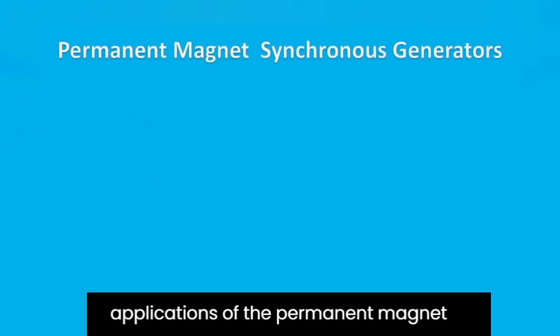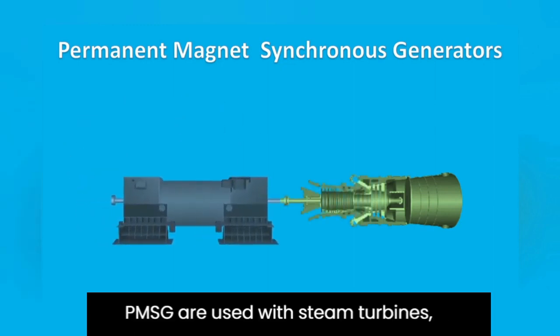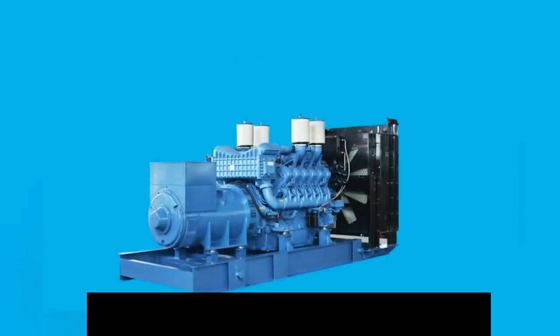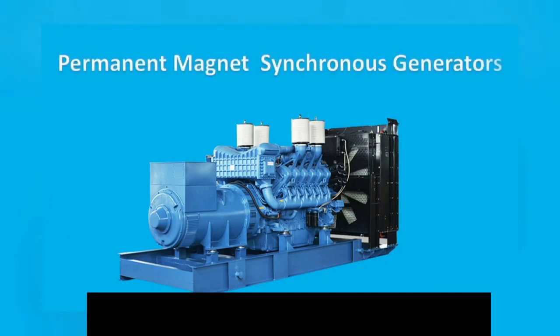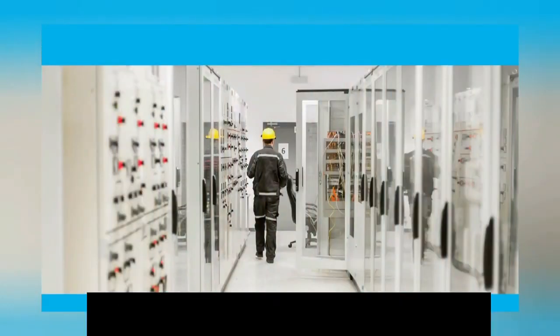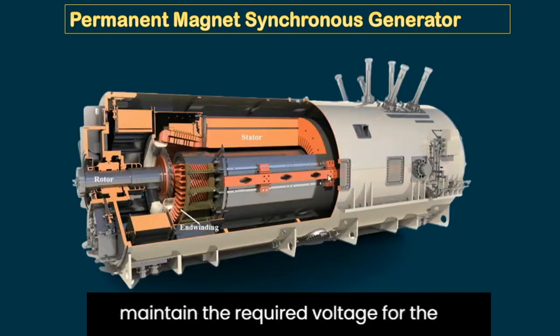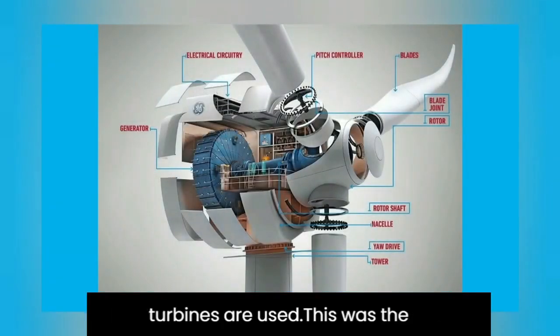These are some applications of the Permanent Magnet Synchronous Generator. PMSGs are used with steam turbines, gas turbines, reciprocating engines, and hydro turbines. They are used to provide power for the excitation of high-rating synchronous generators. During a short circuit in the system, these generators provide power to maintain the required voltage. They are also used in power generation systems where wind turbines are used.